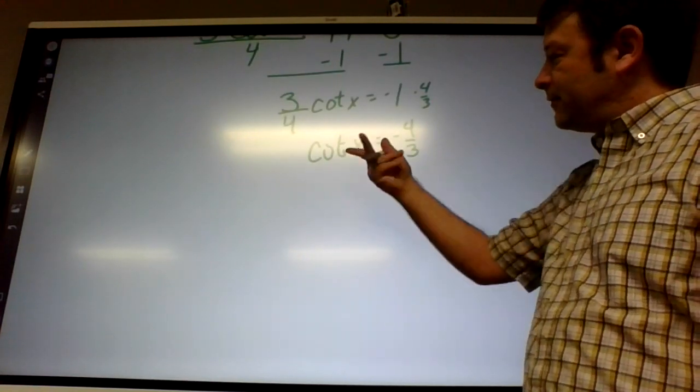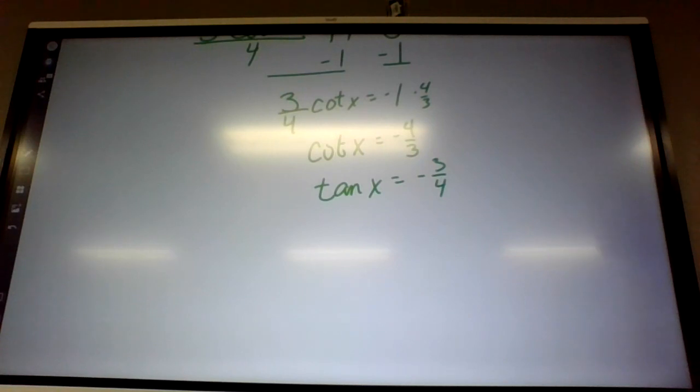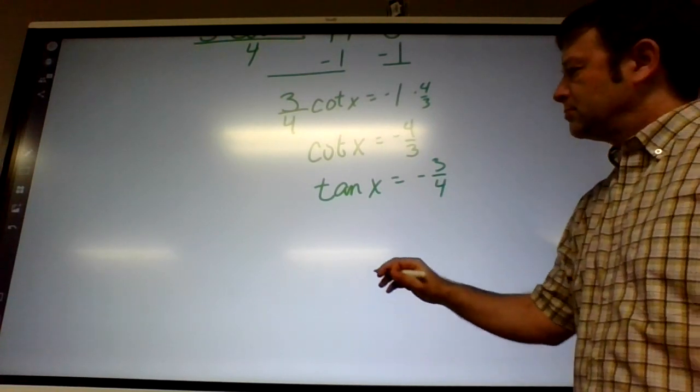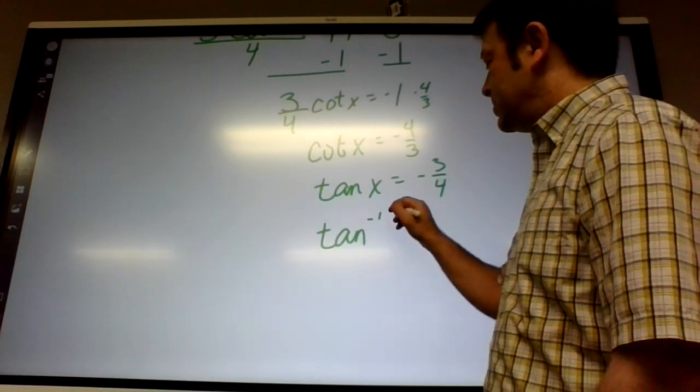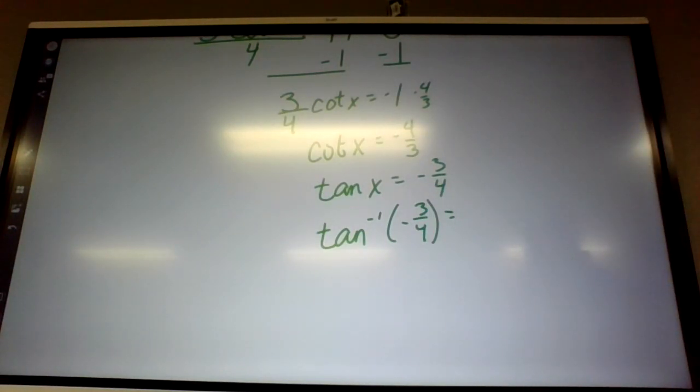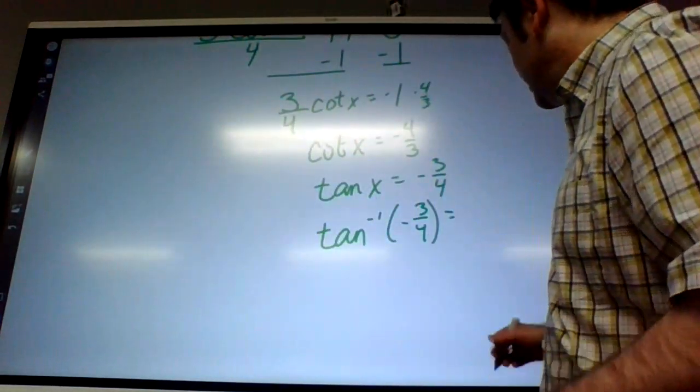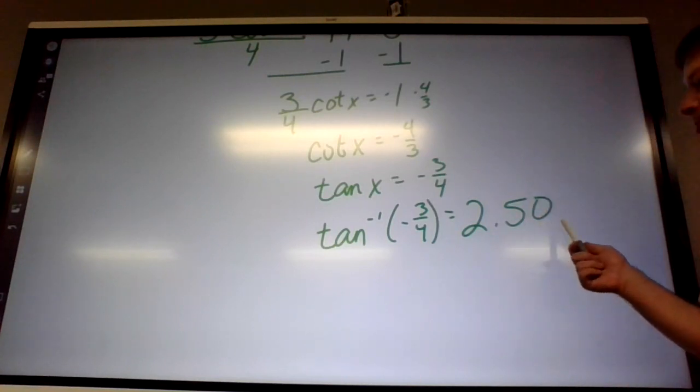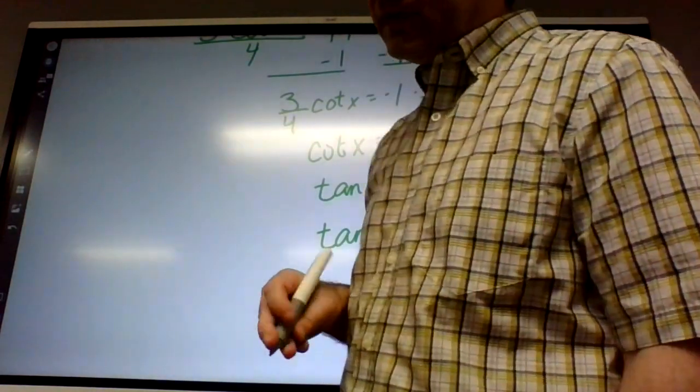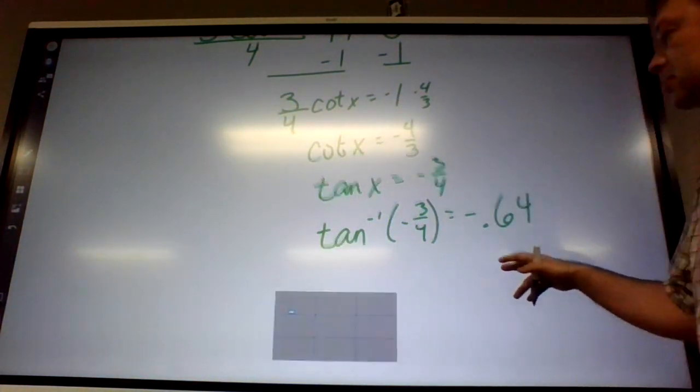Cotangent is a reciprocal function. So, if I flip it, it becomes tangent. And then, if I flip this, it becomes negative 3 fourths. So, tangent inverse of negative 3 fourths. What's that come up to? 2.5? 2.50? The reason they would put 2.50 instead of 2.5 is that they're showing they're being accurate to the second place. Wait, wait, wait, that's not right. I got negative 0.64. Yeah, it should be negative. Oh, yeah, okay. I know what I did. I was looking at the wrong thing.